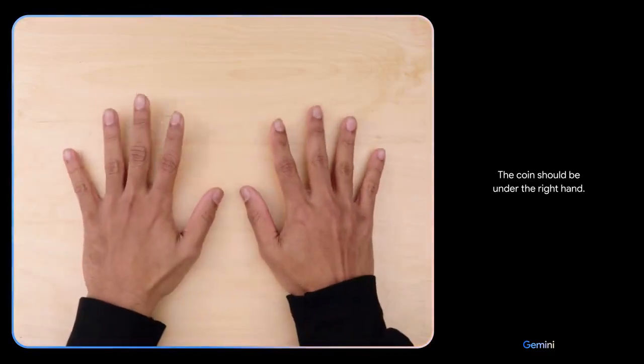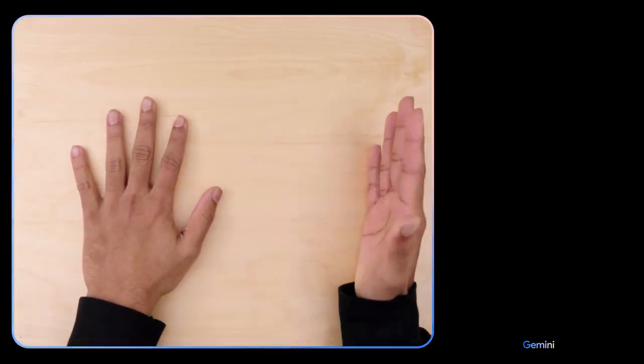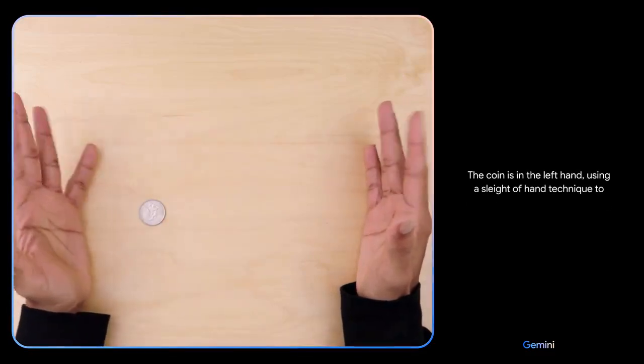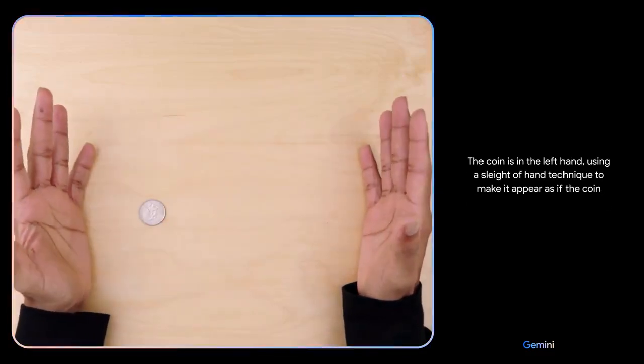The coin should be under the right hand. I don't know. The coin is in the left hand using a sleight of hand technique to make it appear as if the coin has disappeared.